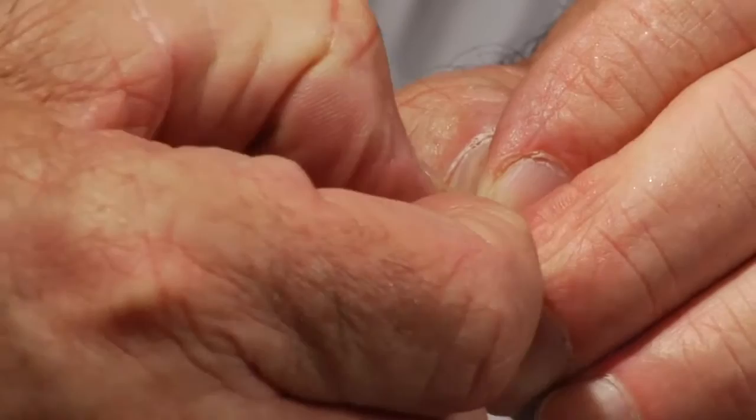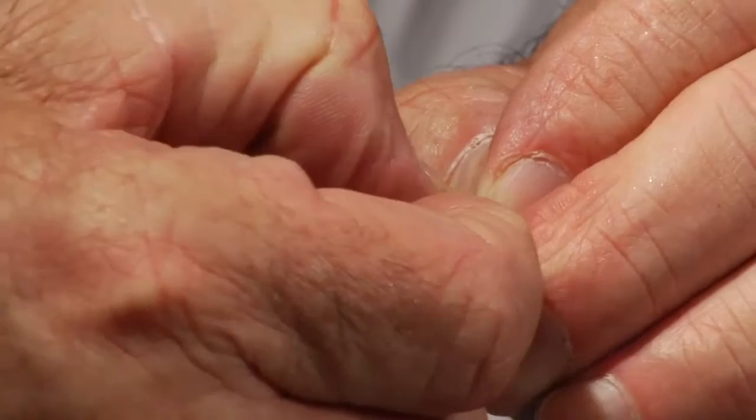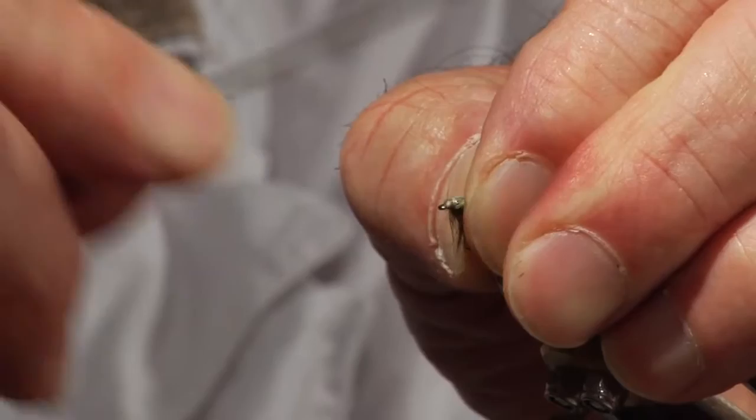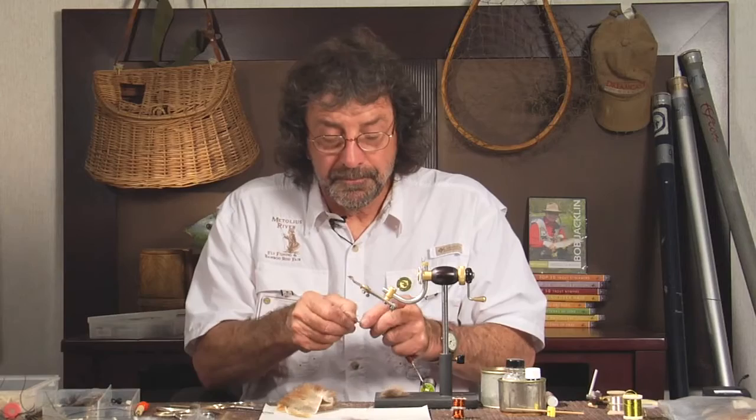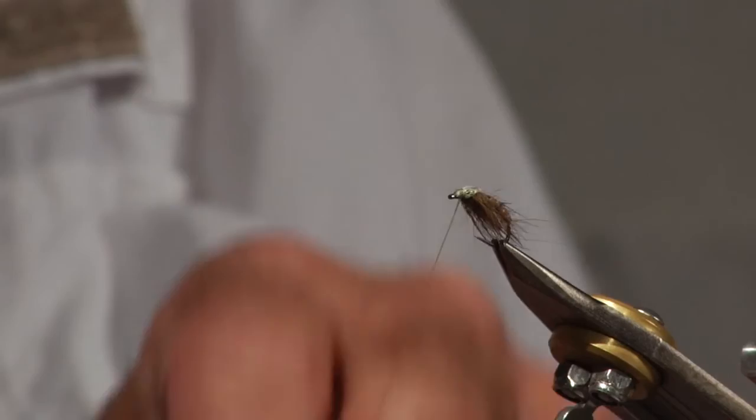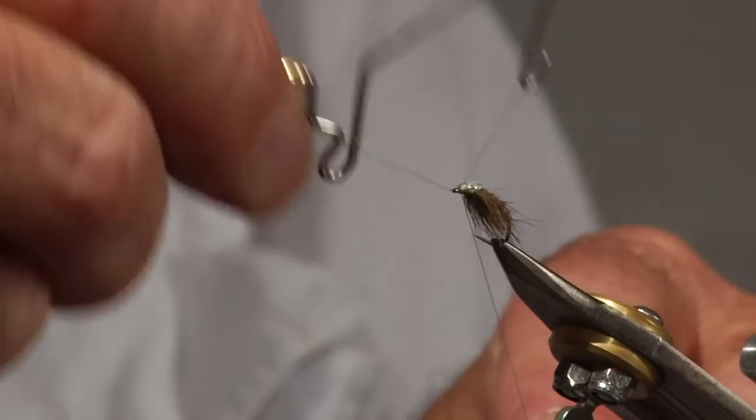I'm going to take and push back again. Try to push off the hook eye as much as we can. Take my whip finisher. I'm going to take this and rotate this back just a little bit. Sometimes that'll help if you're working on a scud hook like this. This is just a scud hook, by the way. It'll help keep the thread from falling off the head.